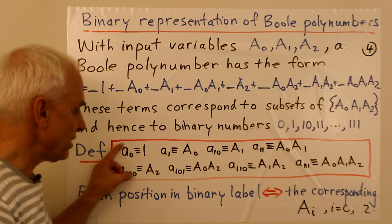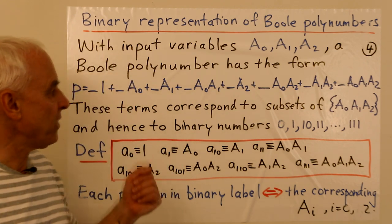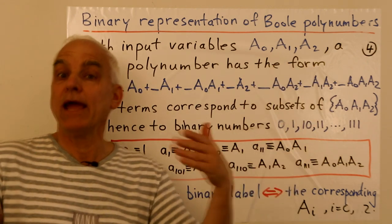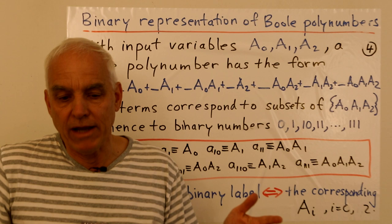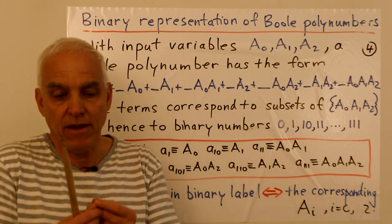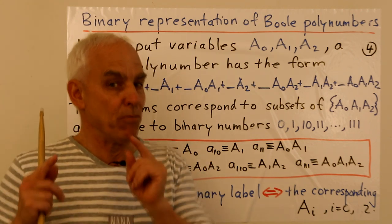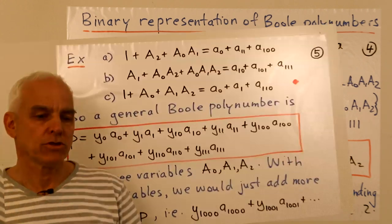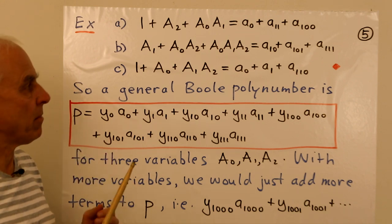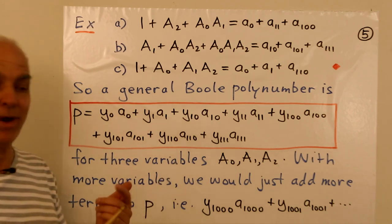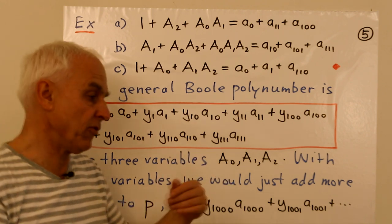So have a good stare at this and make sure that you're happy with this new kind of binary labeling of the basic terms involved in a Boole polynumber. So now we have an alternate way of writing a Boole polynumber, which is ultimately also indexed by the numbers from 0 to 7 in binary. Exactly the same indexing that we have for our Boolean functions.